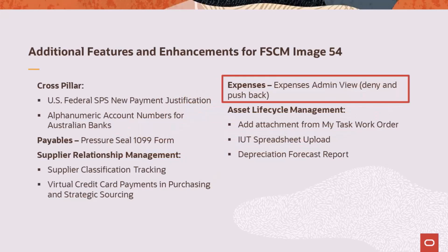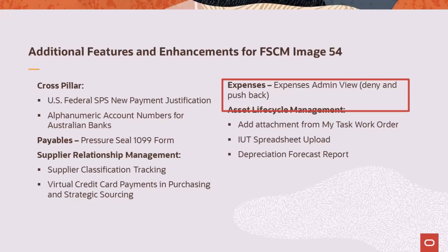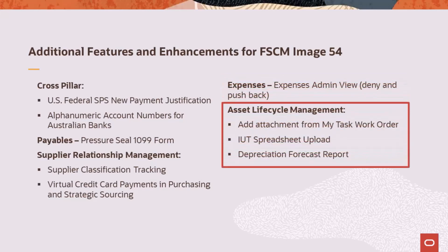The Expenses Admin View page allows you to send an expense report back to the requester and deny an expense report. In Asset Lifecycle Management, a link is now available on the My Task Work Order page, which accesses attachments that are on the Assets General Information page. The Asset Management Inter-Unit Transfer Spreadsheet Upload includes chart fields and location code changes. A 7-Year Depreciation Forecast Report is added to the depreciation reporting load process.